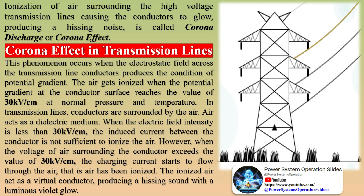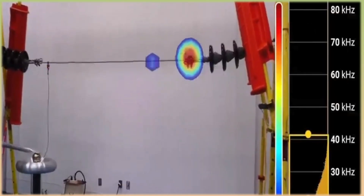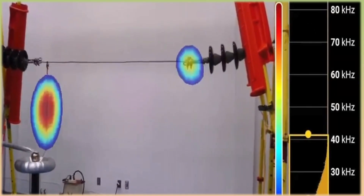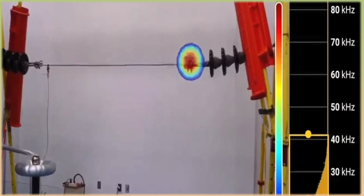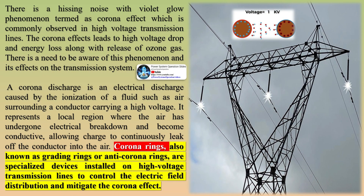In transmission lines, conductors are surrounded by air, which acts as a dielectric medium. When the electric field intensity is less than 30 kV/cm, the induced current between the conductors is not sufficient to ionize the air. However, when the voltage of air surrounding the conductor exceeds 30 kV/cm, the charging current starts to flow through the air — that is, the air has been ionized.